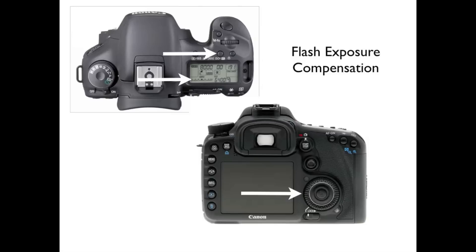For flash exposure compensation, you're going to use the same exposure level indicator. Push the flash exposure compensation button — it's the same button you use to change your ISO. Push this button and then turn the dial. Once you turn the dial, you're changing the brightness level of your flash, whether you want to intentionally power your flash up or power your flash down.